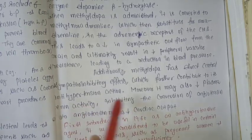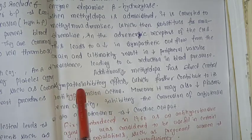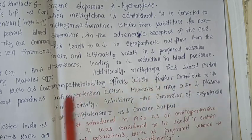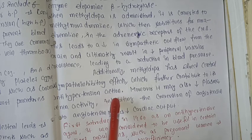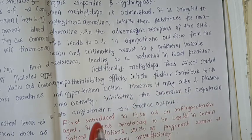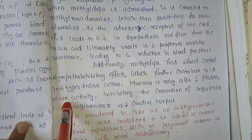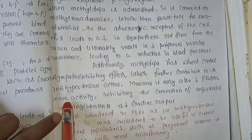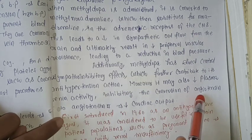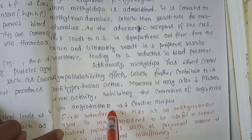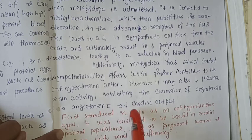Additionally, methyldopa has a direct sympatho-inhibitory effect, which further contributes to its anti-hypertensive action. Moreover, it may also decrease plasma renin activity by inhibiting the conversion of angiotensin 1 to angiotensin 2, and it decreases cardiac output.